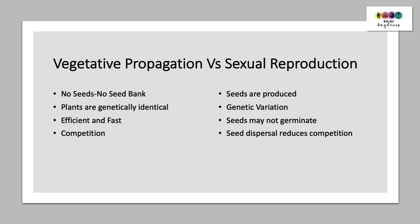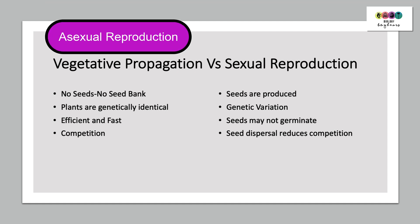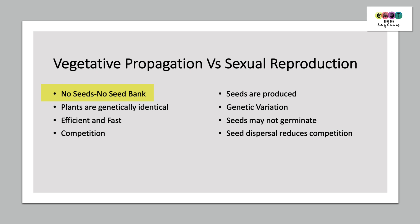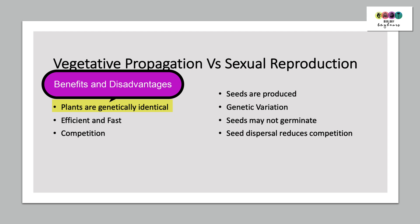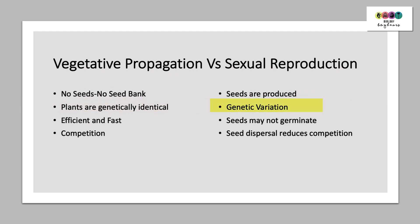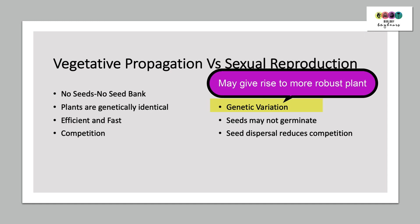Now let's compare vegetative propagation, which is asexual reproduction, with sexual reproduction in plants. With vegetative propagation, there are no seeds produced, so there's going to be no seed bank. With sexual reproduction, seeds are produced, so there is a seed bank. The plants produced by vegetative propagation are genetically identical to the parent plant — this can be a great benefit if the parent plant has a trait you want to preserve, like disease resistance or a particular flavour in fruit. However, it can also be a disadvantage, because if the parent plant is susceptible to a disease, all plants formed from it will also have that flaw. With sexual reproduction, you do introduce genetic variation, and sometimes this can give rise to a more robust plant.